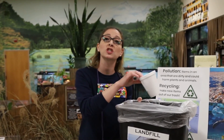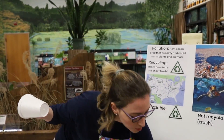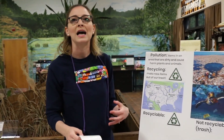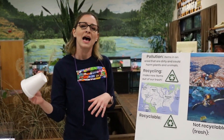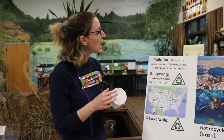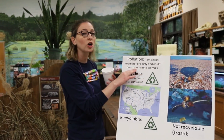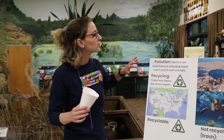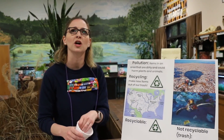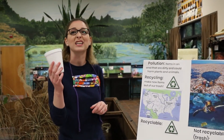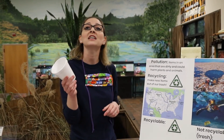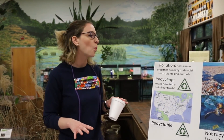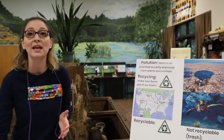Pollution is when items do not get into the trash can like they're supposed to. Instead of going into the trash can, maybe the styrofoam cup gets thrown outside and ends up on our lawns or in our rivers. As soon as it is outside in a place where it's not supposed to be, dirty and harmful to plants and animals, that is when it becomes pollution. So pollution is trash that isn't in the trash can — it's out in the world, and a plant or animal could get stuck on it or eat it, which is harmful.